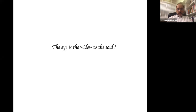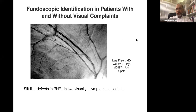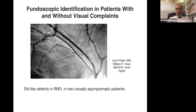It wasn't long ago when neuro-ophthalmologist Dr. Hoyt — one of the most important neuro-ophthalmologists of the last century — noticed slit-like defects in the retinal nerve fiber layer when using an ophthalmoscope to look at the fundi of patients with multiple sclerosis. Those patients were visually asymptomatic; they did not have optic neuritis. They were mostly patients who had other neurological events, namely spinal cord and brainstem events.